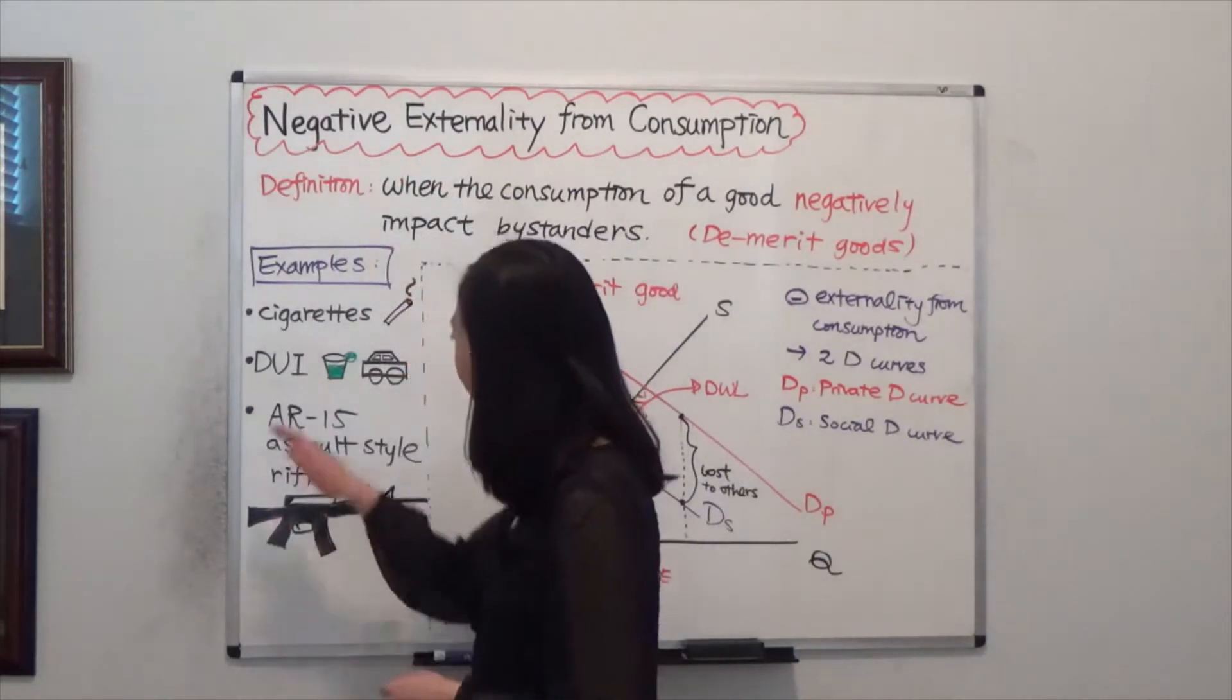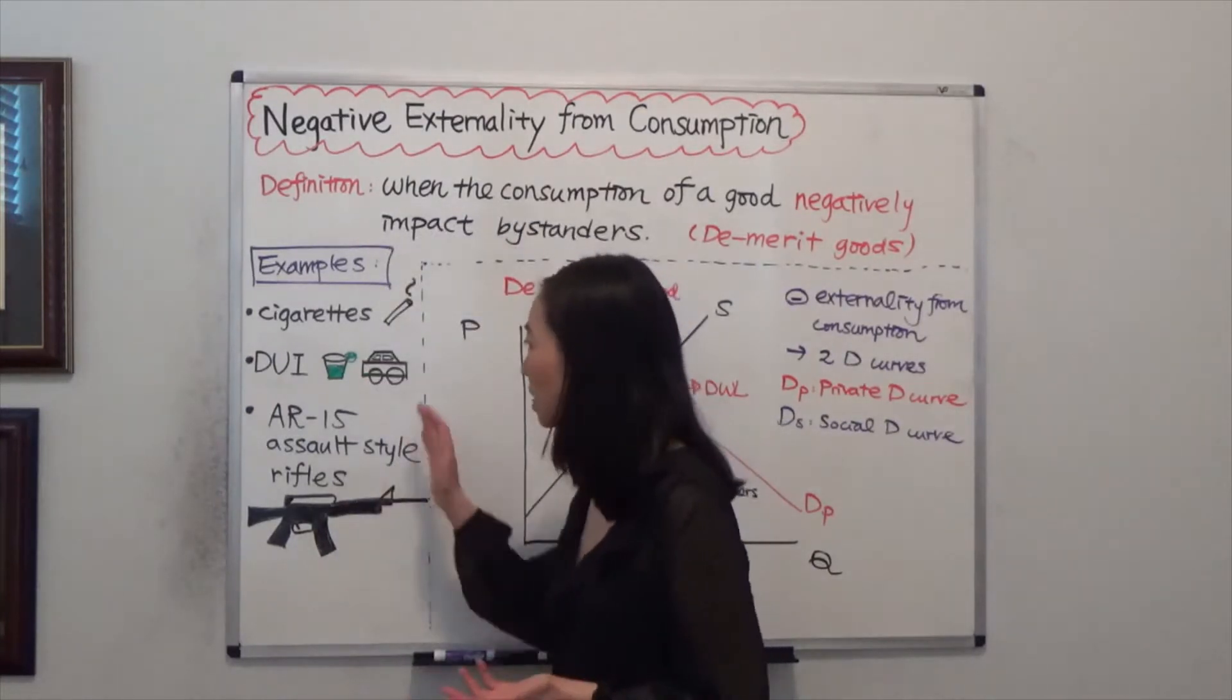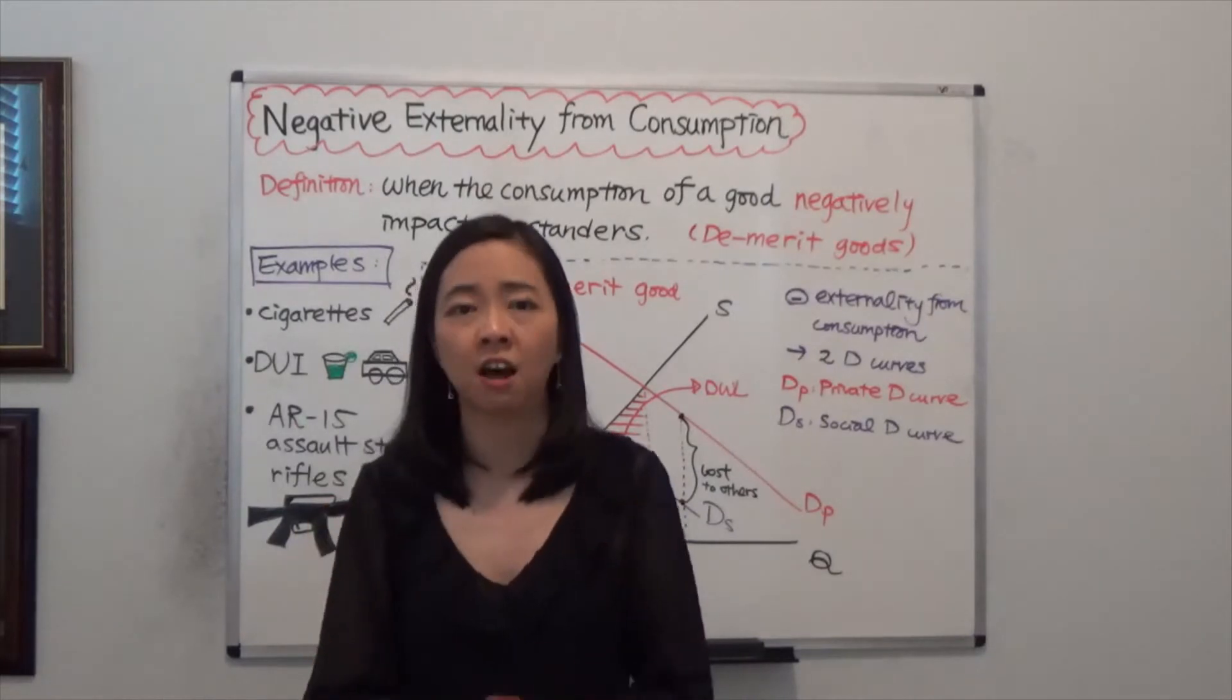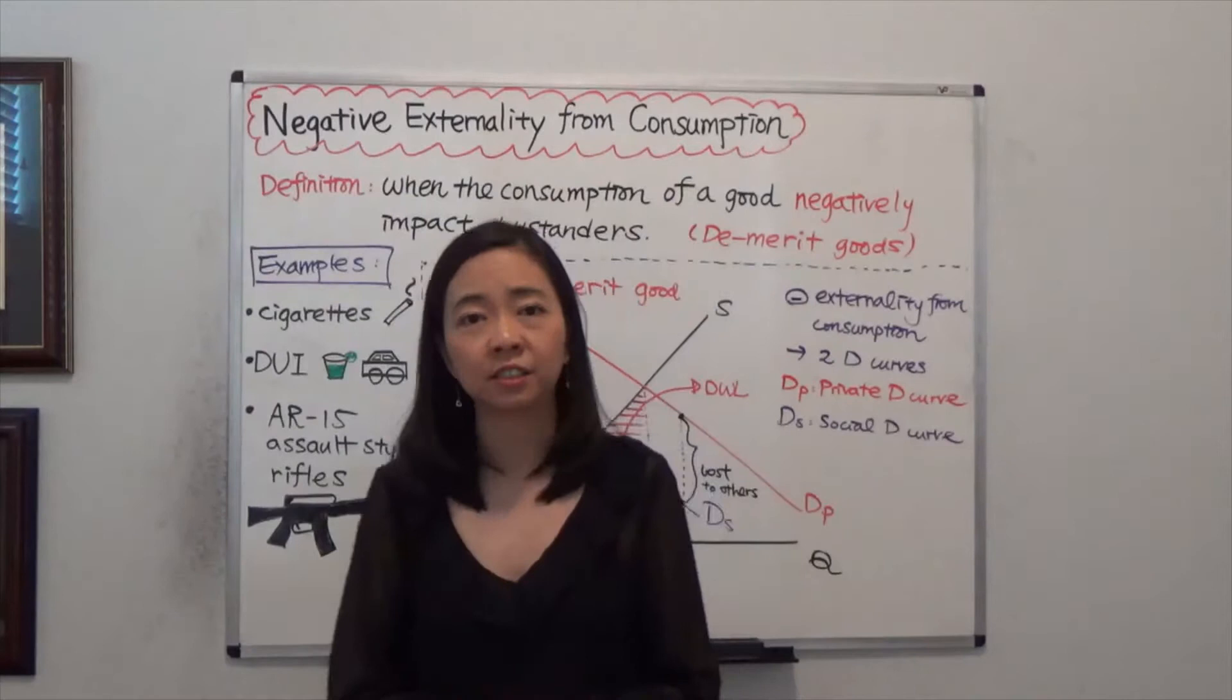Another example is DUI. You consume some alcohol and then you feel drunk, but you still go ahead and operate a motor vehicle, endangering others' lives. So that is also negative externality from consumption.